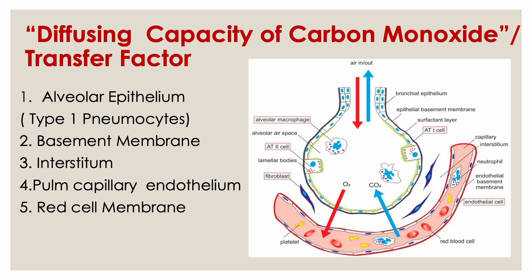To understand what the diffusion test is, we need to understand the basic unit of the alveoli — the alveolar capillary basement membrane. This is the membrane interface where all diffusion of gases takes place. When we inhale, oxygen is transferred through the alveoli into the pulmonary capillaries and carbon dioxide diffuses out. The air has to cross the alveolar epithelium, which consists of type 1 pneumocytes.